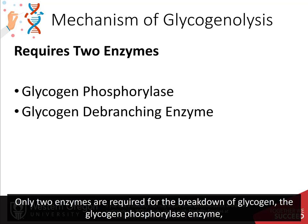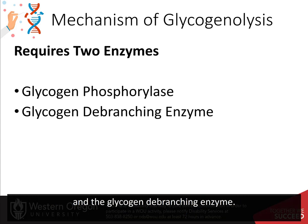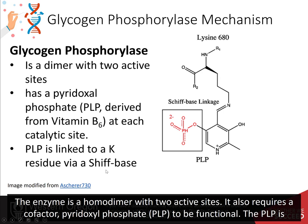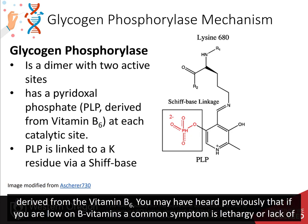Only two enzymes are required for the breakdown of glycogen: the glycogen phosphorylase enzyme and the glycogen debranching enzyme. Glycogen phosphorylase catalyzes the release of glucose-1-phosphate from the alpha-1,4-non-reducing end of glycogen. The enzyme is a homodimer with two active sites. It also requires a cofactor, pyridoxal phosphate or PLP, to be functional. The PLP is derived from vitamin B6.